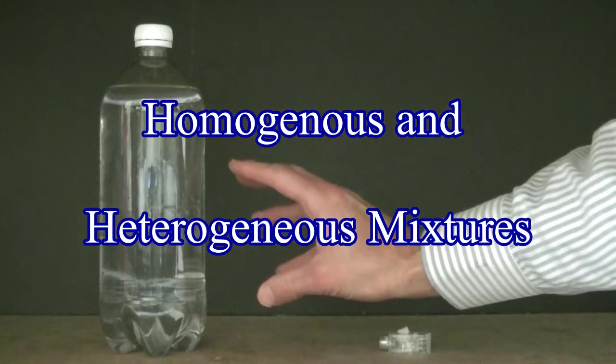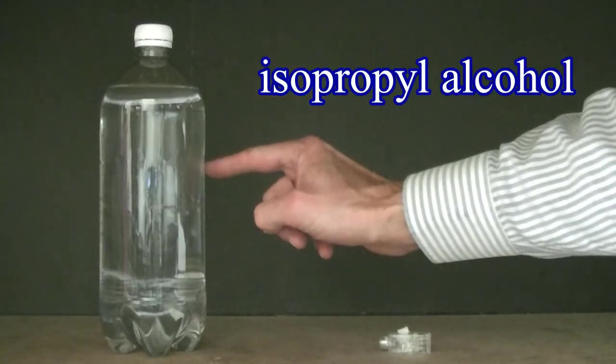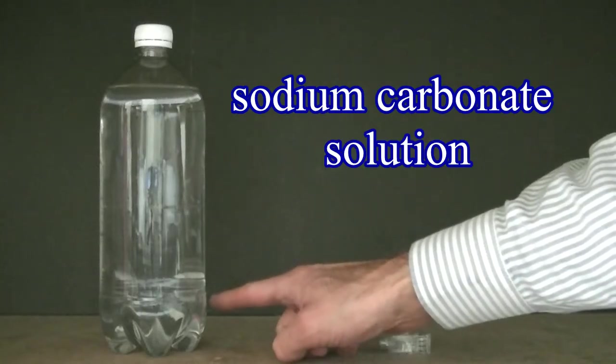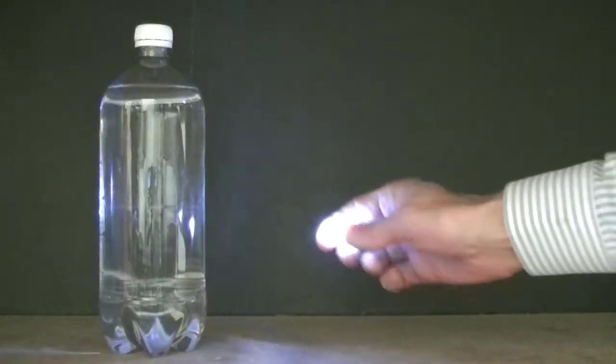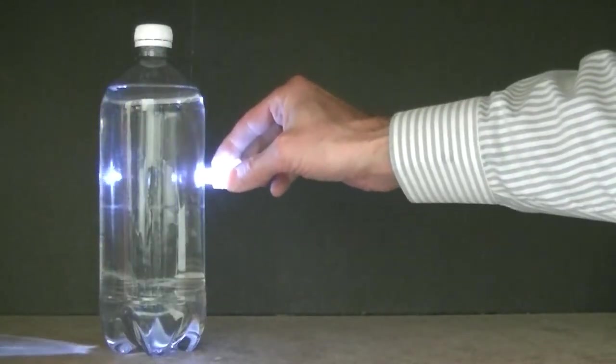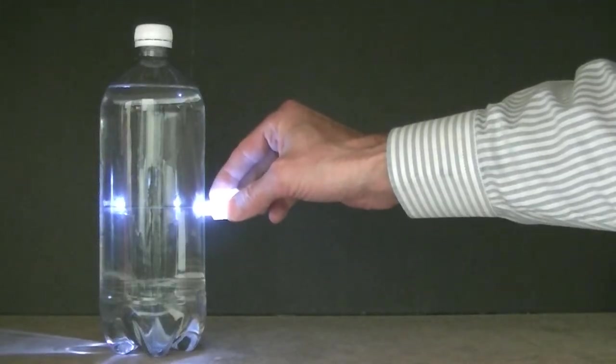Two liquids are contained in this bottle: isopropyl alcohol on top of a solution of sodium carbonate. It's tough to see, but if I use this flashlight, you can see the interface between the two layers, right about there.